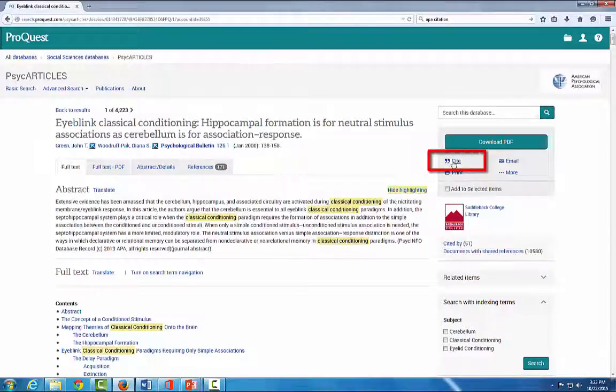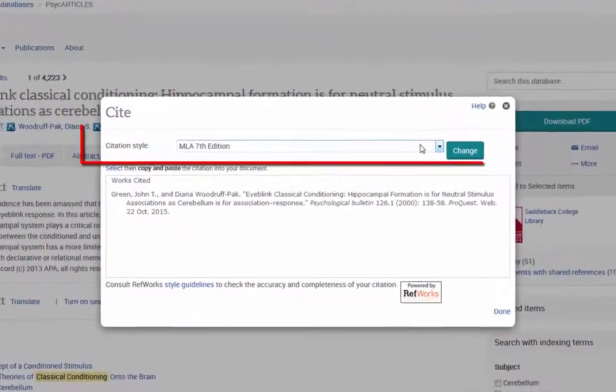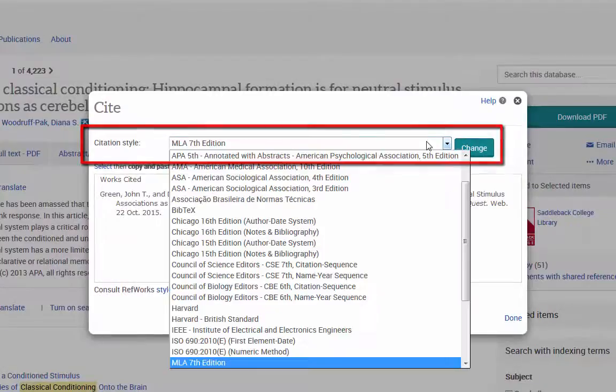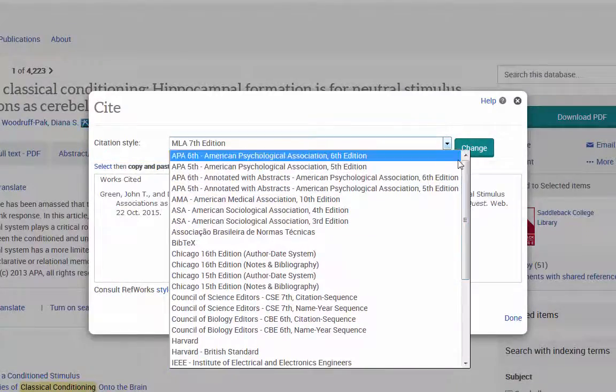Click Cite on the right hand side of the article page. Note that the citation that pops up is not in APA format. Click the drop down menu and scroll up to the APA 6th edition. You do not want to use the 5th edition as that is now an older edition.